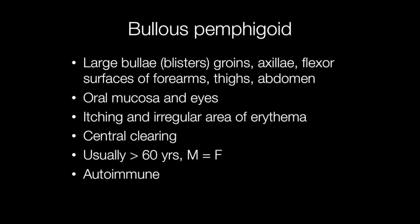Pemphigoid is characterized by large bullae or blisters that tend to affect the groins, axillae, flexor surfaces of the forearms, anterior and inner thighs, and the abdomen. They can also affect the oral mucosa, the tongue, cheeks, and eyes, and also the oesophagus.